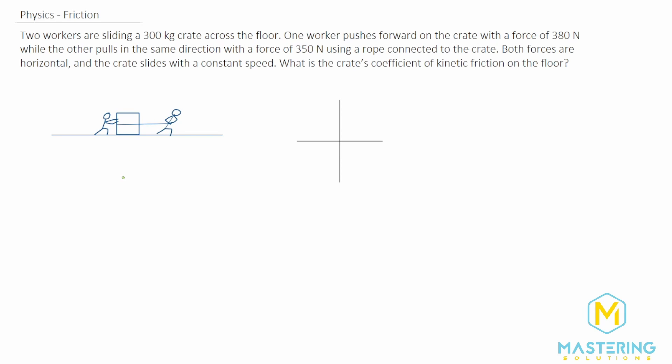Welcome to Mastering Solutions. In this friction problem we have two workers sliding a 300 kilogram crate across the floor. One worker pushes forward on the crate with 380 newtons while the other pulls it in the same direction with a force of 350 newtons using a rope.